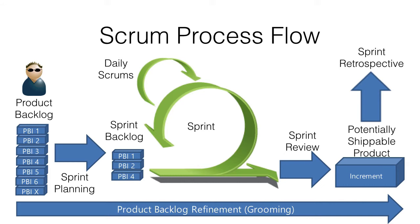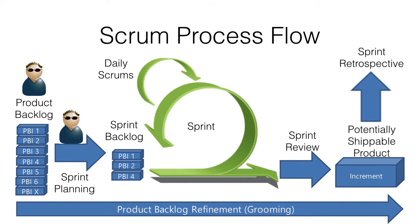The Scrum team get together in a sprint planning meeting and decide what items in the product backlog they can work on and complete during the next time period. This list of items is called the sprint backlog. Here the Scrum master needs to make sure the development team are not pressurized by the product owner to take on more work than they can accomplish in the sprint time box. On the other hand, he needs to help the product owner maximize the number of product backlog items completed in each sprint.